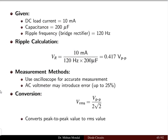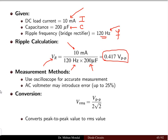Let us take an example: the DC load current is 10 milliamperes and the capacitor value is 200 microfarads, with a ripple frequency of 120 Hz. The ripple voltage is calculated as 10 mA divided by (120 Hz × 200 µF), giving a peak-to-peak ripple voltage of 0.417 V.